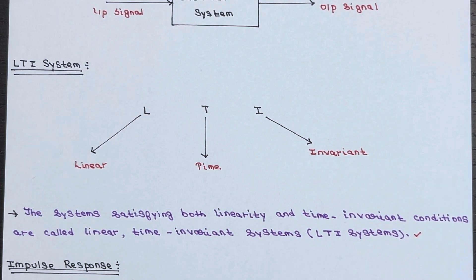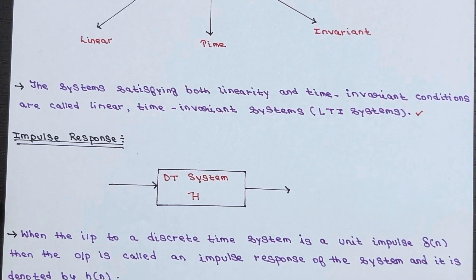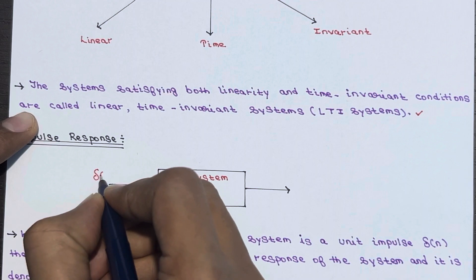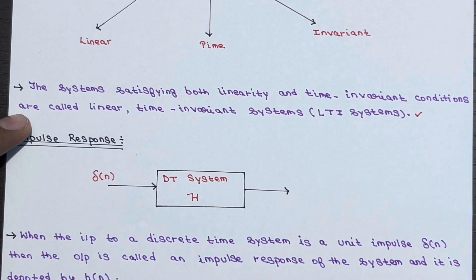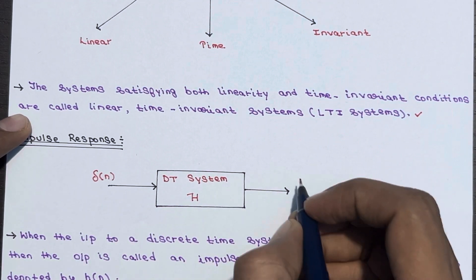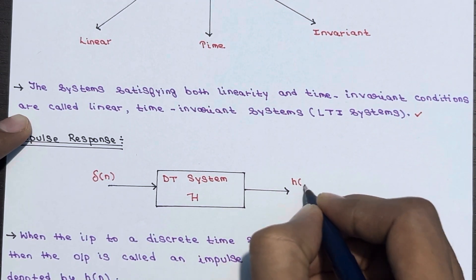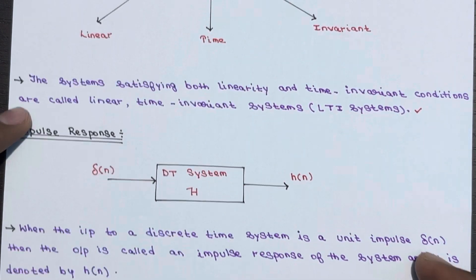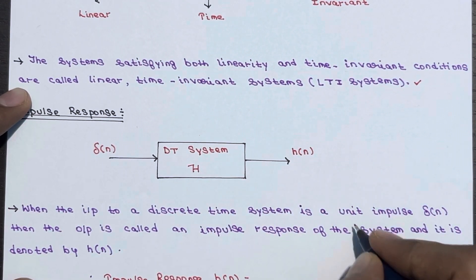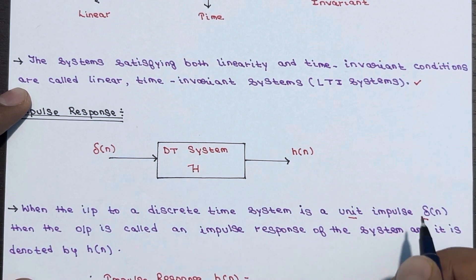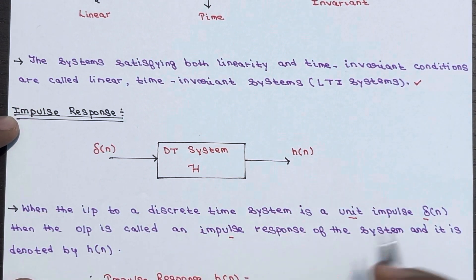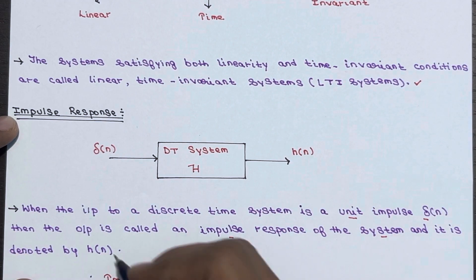Now let's discuss impulse response. When a unit impulse δ(n) is the input to the discrete time system, the resulting output is referred to as the impulse response of the system and is denoted by h(n). So when the input to the discrete time system is the unit impulse δ(n), the output is called the impulse response of the system, denoted by h(n).